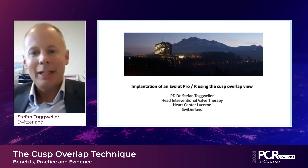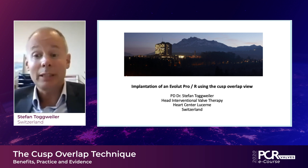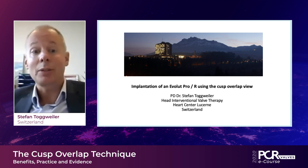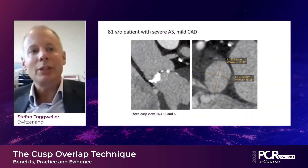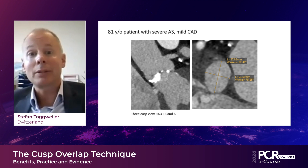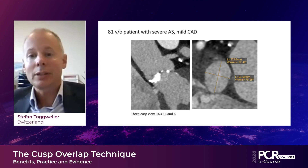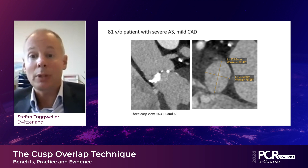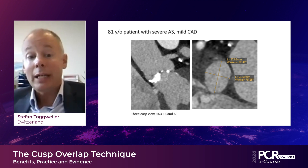Thank you, Lars, for the introduction. In fact, we have only started using this technique about two to three months ago, and our experience so far is really very good. This is an 81-year-old man with severe aortic stenosis and mild coronary artery disease. You can see pictures of the annulus with heavy calcification, and the dimensions of the annulus which are 28 by 21 millimeters. In this patient, the traditional three-cusp view with the right coronary cusp in the middle was REO-1, caudal-6.